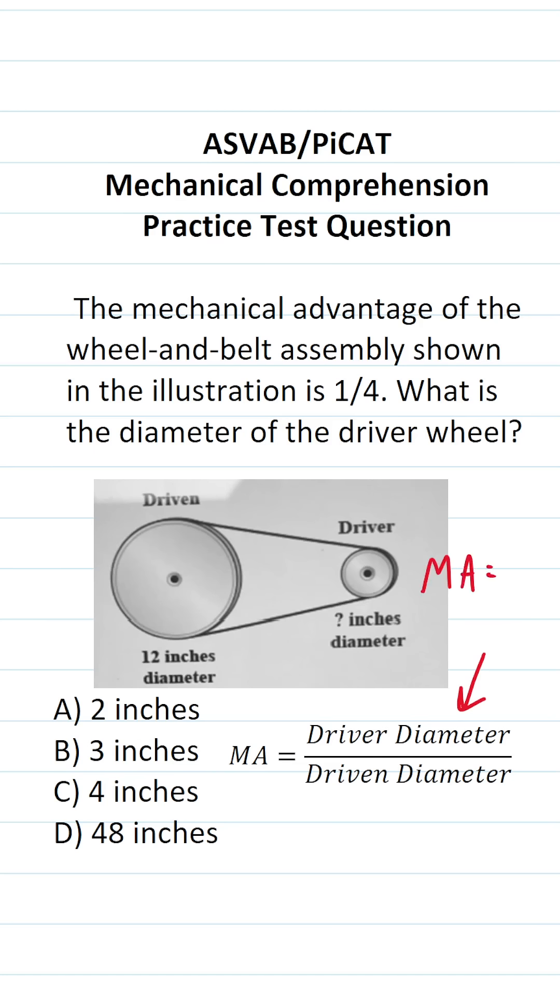And of course, we were told that the mechanical advantage of this assembly was one-fourth. So let's go ahead and plug in one-fourth for MA.